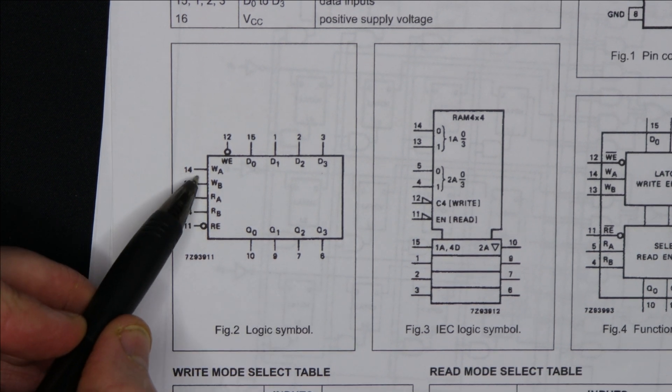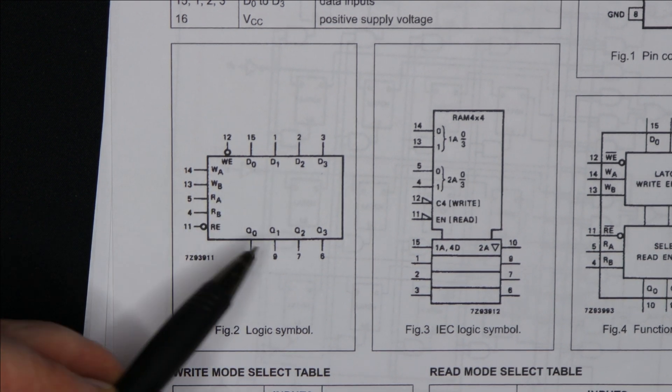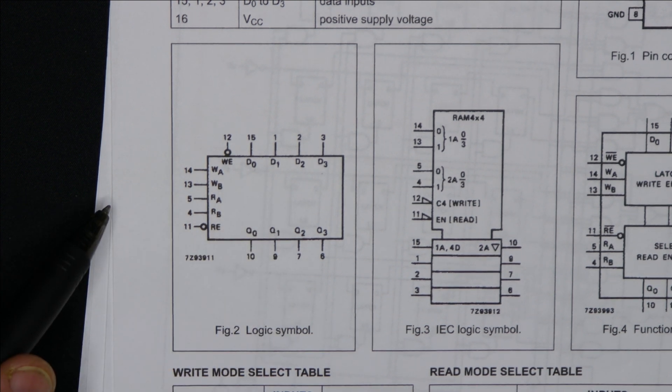The write address and the read address are independent, so I can be writing to any one of the four registers and simultaneously reading from any one of the four registers, including the one that's actually being written to.